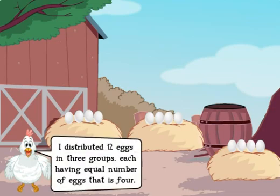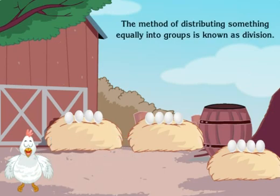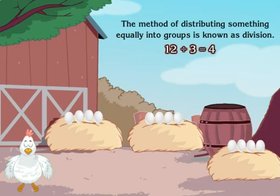Here, I distributed twelve eggs in three groups, each having equal number of eggs, that is, four. The method of distributing something equally into groups is known as division. The distribution of twelve eggs into three groups can be represented mathematically as twelve divided by three is equal to four. The sign is the sign of division.